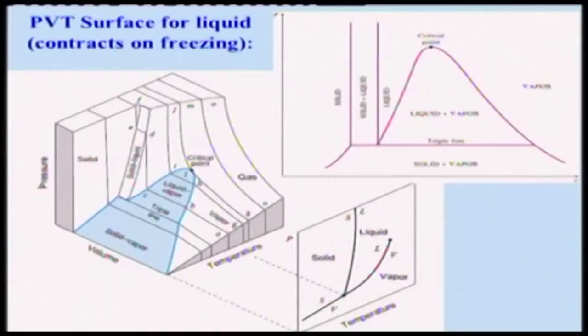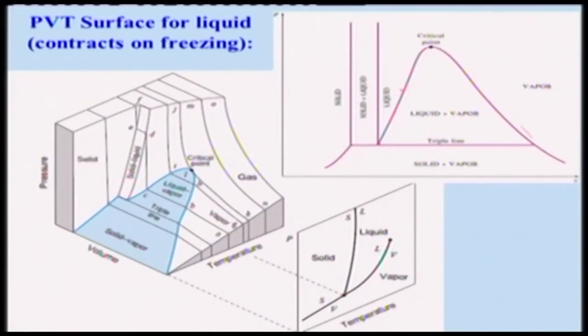Let us now look at the three-dimensional P-V-T diagram for a substance that contracts on freezing. If you look at this diagram, there is a solid region, a solid-vapor region, and a triple line — not a triple point but a triple line in 3D. This side is solid, this side is solid-liquid, and the other side is vapor and liquid. The critical point is where vapor and liquid coexist. This P-V-T representation is valid for most substances except water.